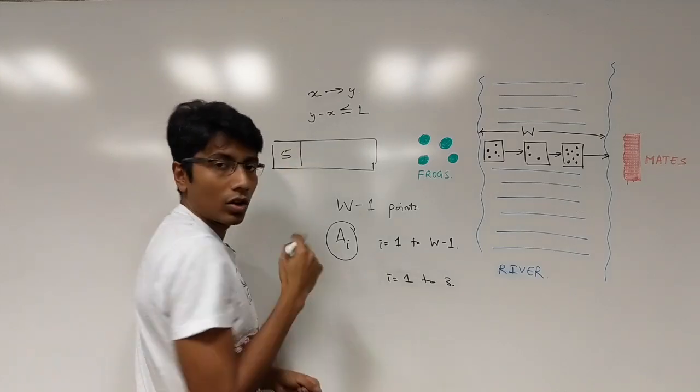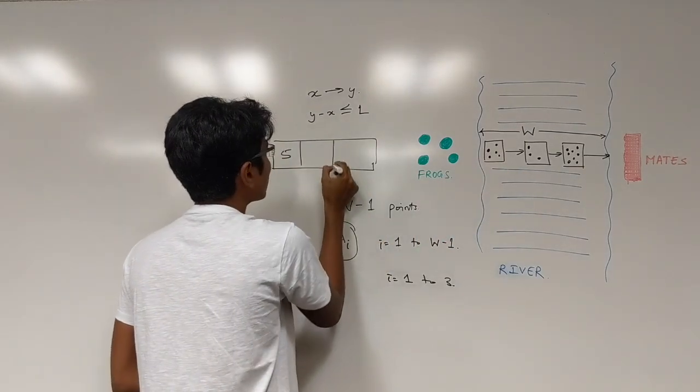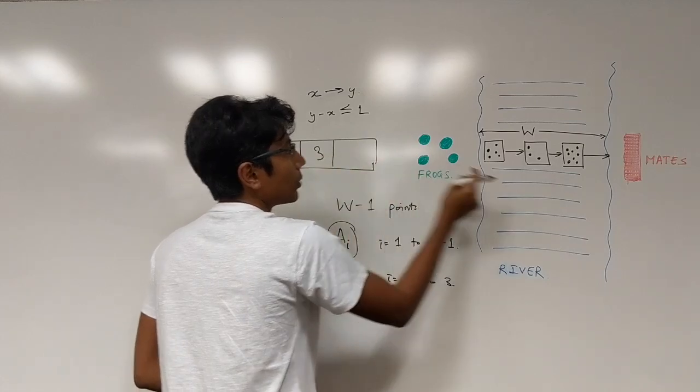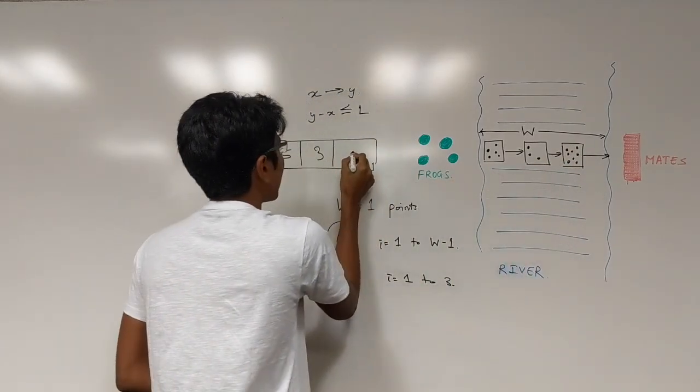So 5 on this side, at point number 2 we have 3 stones, point number 3 we have 1, 2, 3, 4, 5, 6, 7, 8 stones.